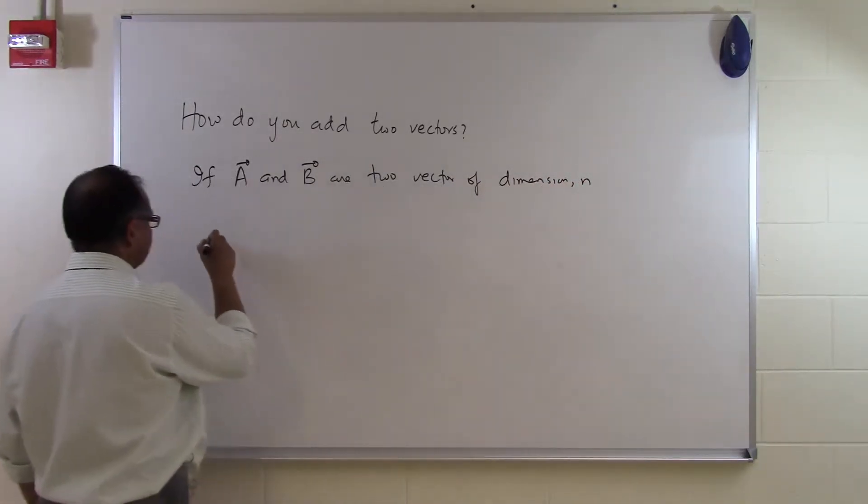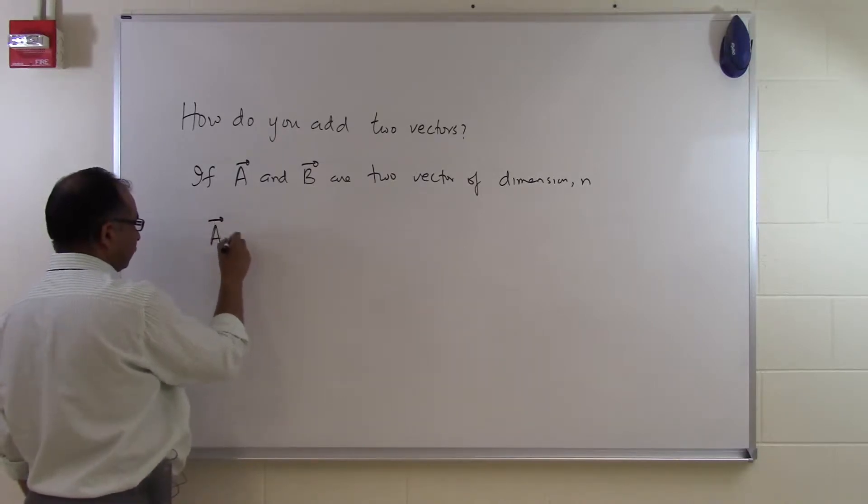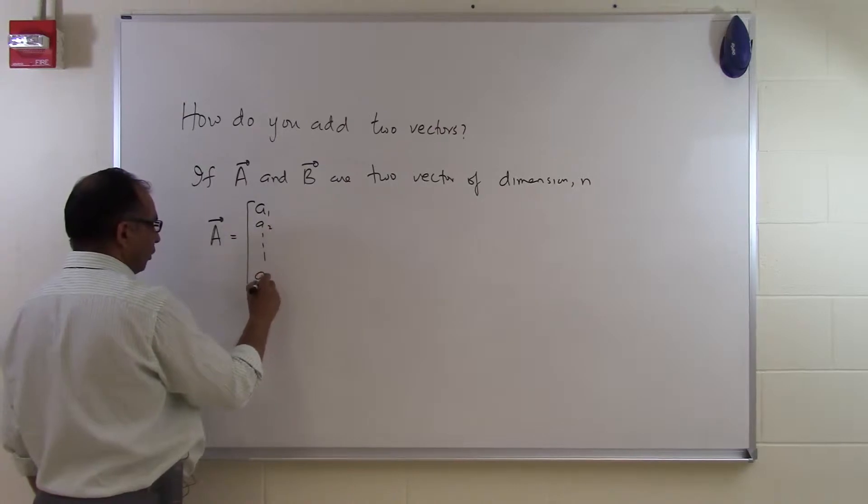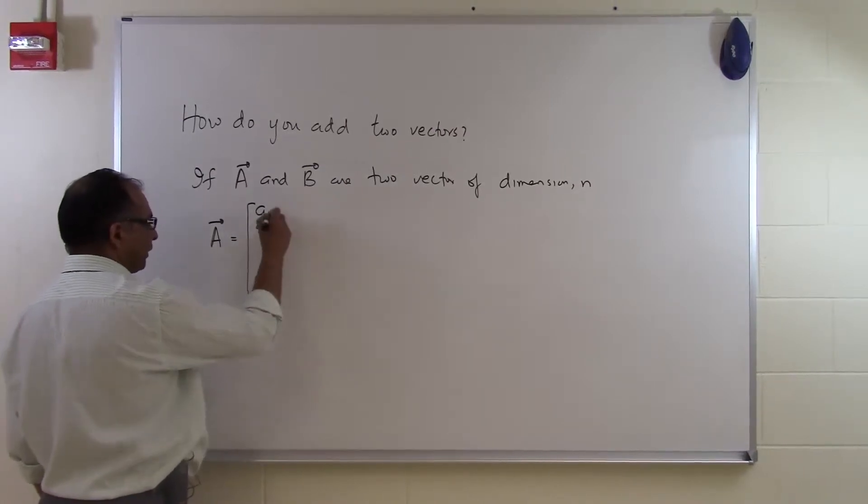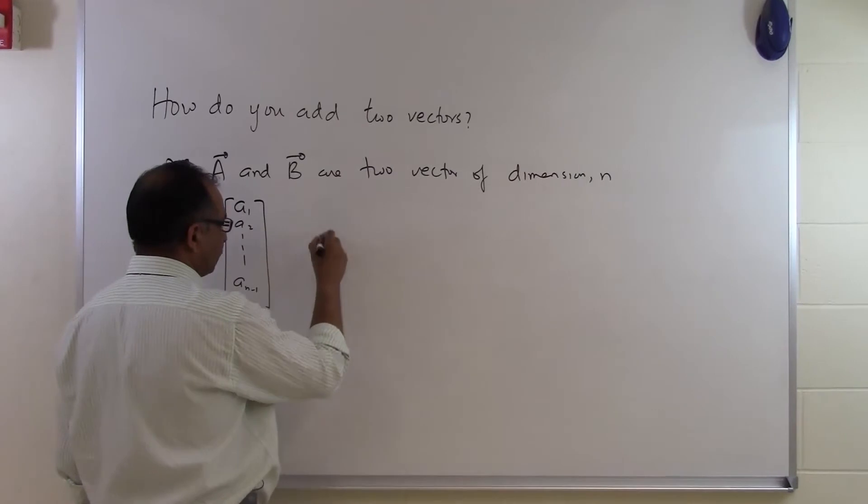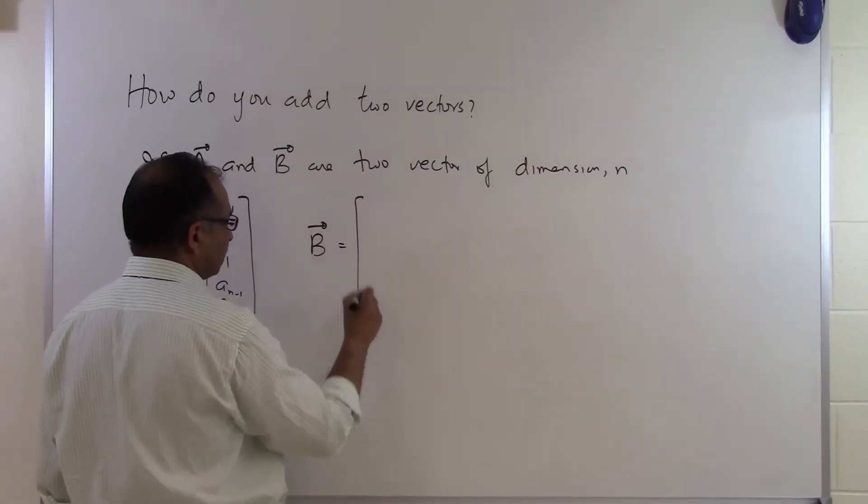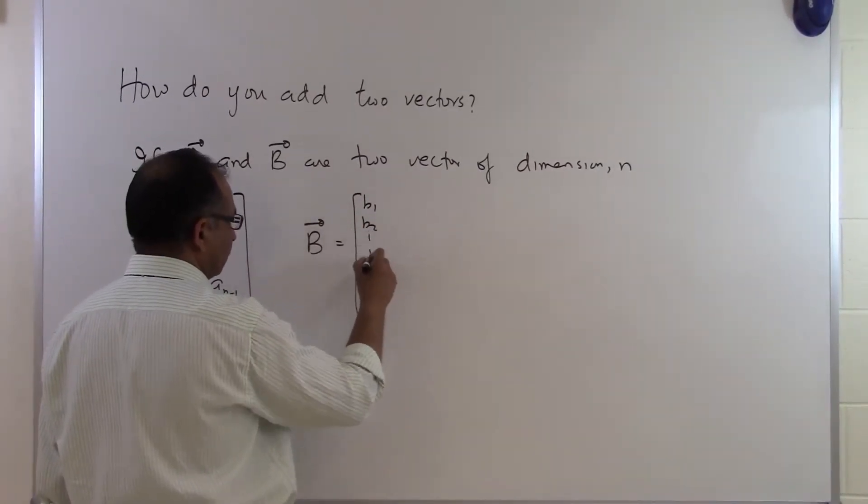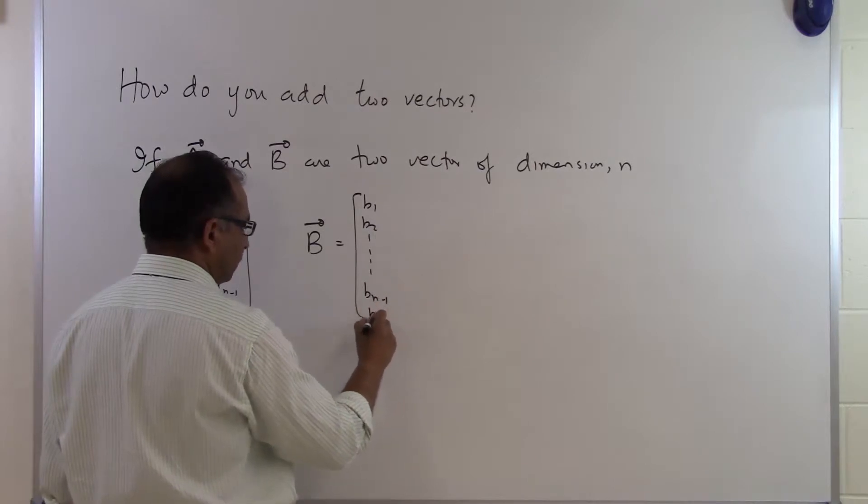So let's suppose vector A is given to us as A1, A2, all the way up to A sub n minus 1, A sub n. And then you have another vector B, which is given to you as B1, B2, all the way up to B sub n minus 1, B sub n.